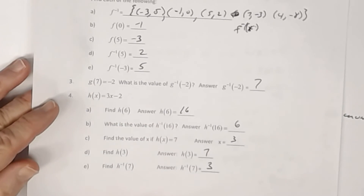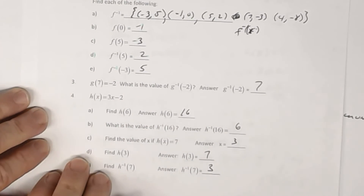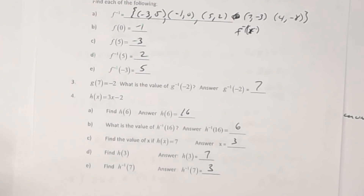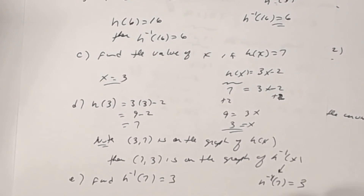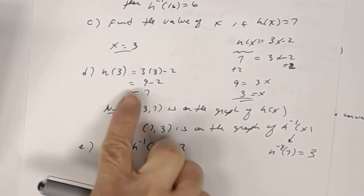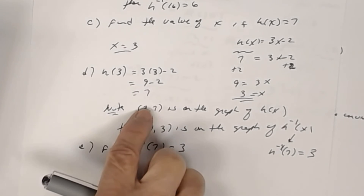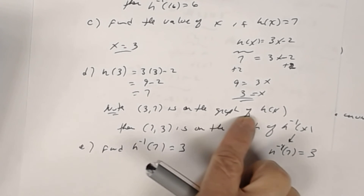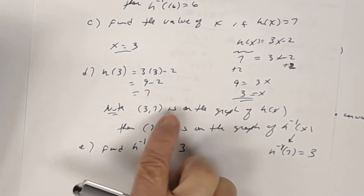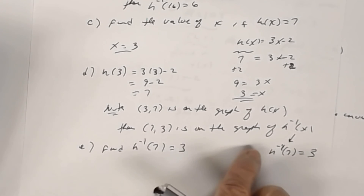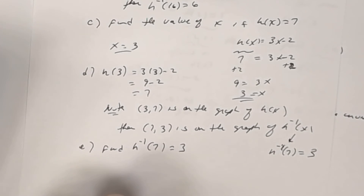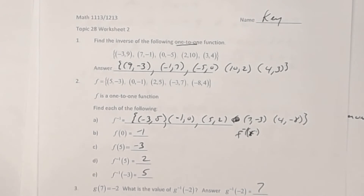Some students find this a little challenging. Go back over those lessons in Canvas to make sure you understand the ideas presented here. It helps to think: when h(3) = 7, the point (3, 7) is on h(x), so (7, 3) is on the inverse, meaning h⁻¹(7) = 3. That is the key — that's the key to Worksheet 2.